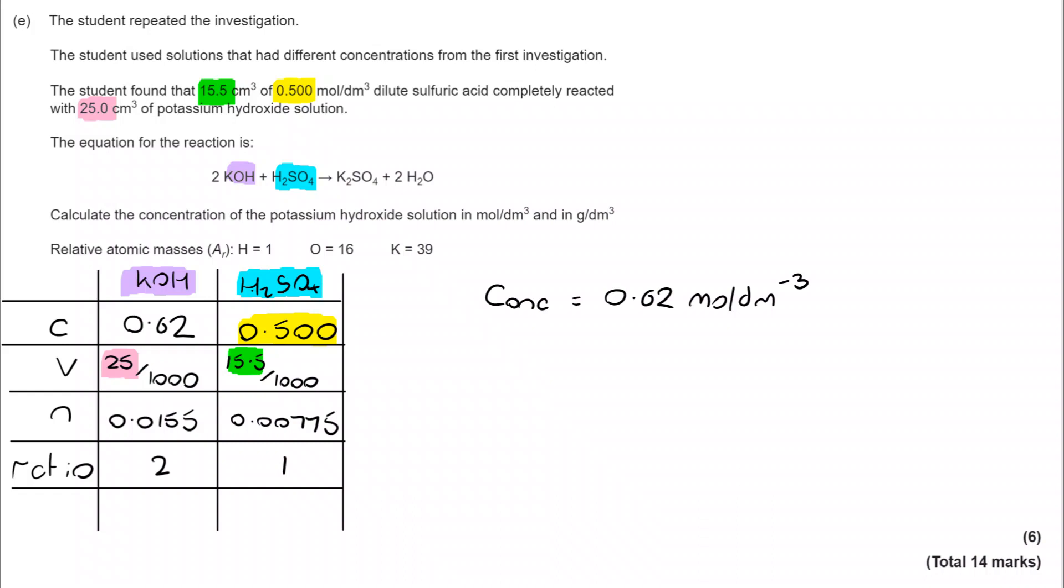But we're still not done because we want grams per decimeter cubed as well. Well, if I know that in one decimeter cubed I've got 0.62 moles, I can work out the mass by using m is n times Mr. My number of moles is 0.62, and my molecular mass is 39 plus 16 plus 1. I put those in and I get 34.7 grams per decimeter cubed.